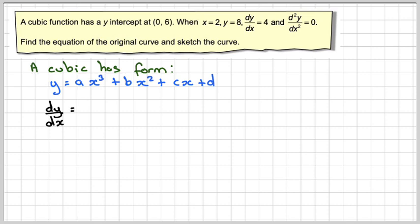If we differentiate this and treat a as a constant, you bring down the 3 to get 3ax², then 2bx, and differentiating cx gives c. A constant becomes 0. The second derivative is 6ax plus 2b.